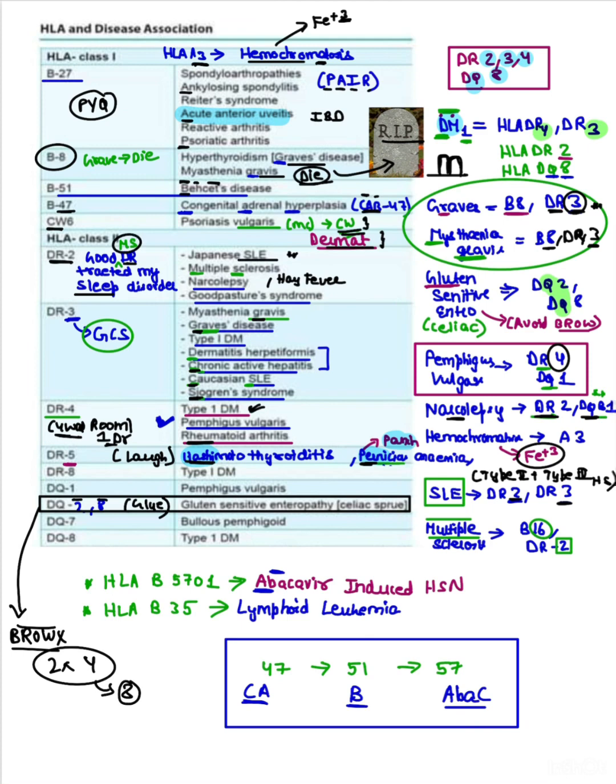Now coming to multiple sclerosis. We had Good MS Doctor. MS was for multiple sclerosis. Also you can remember: multiple is eight letters. Multiples of 8: 8 times 2 is 16, that is B16 and DR2. MS, multiple sclerosis is a two-letter word, and adding multiple: 8 times 2 is 16.